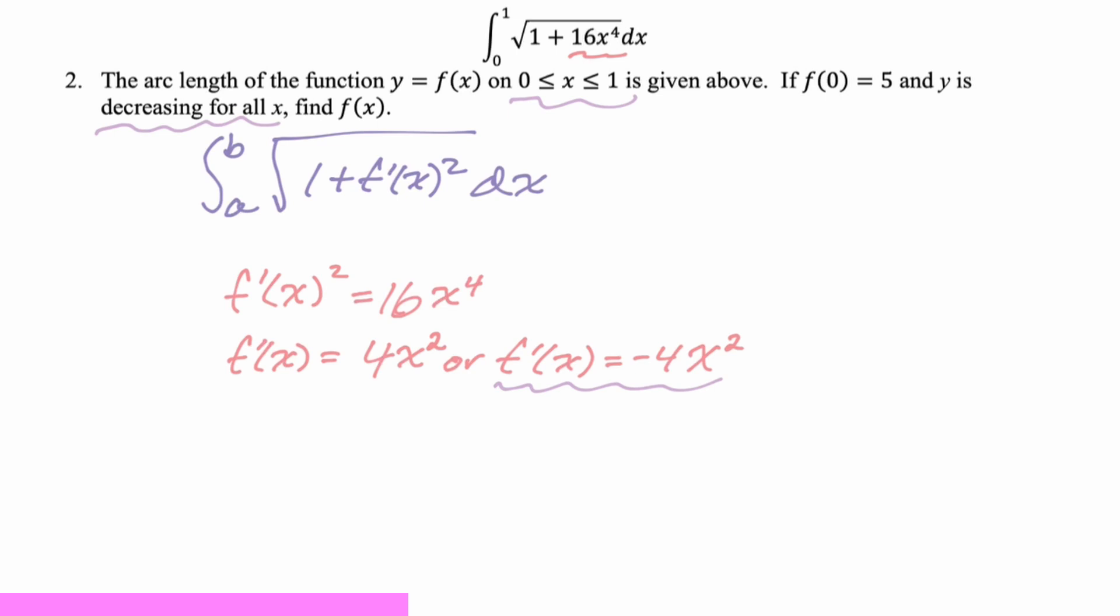So we now know f prime is negative four x squared, which means that f of x is going to be reverse the power rule. So plus one times the reciprocal negative four thirds, x cubed plus c. We know that f of zero is five, which tells us that since f of zero is five, we know that c is just going to equal five, which means our overall answer, f of x is going to be negative four thirds x cubed plus five.